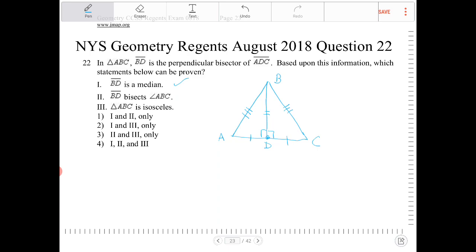BD bisects angle ABC. That is also true because if you look at this, these two angles must be congruent because of CPCTC. So these two are correct.